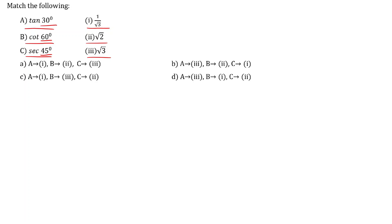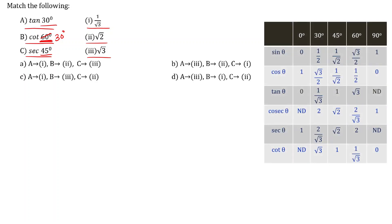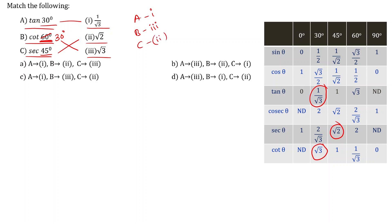If you know the trigonometric ratios table well, these problems are easy. Note it is cot 30 degrees, not cot 60 degrees — please be careful. From the table, tan 30 degrees is 1 by root 3, so A matches with 1. Cot 30 degrees is root 3, so B matches with 3. Sec 45 degrees is root 2, so C matches with 2. Therefore, a equals 1, b equals 3, c equals 2, and choice C is the answer.